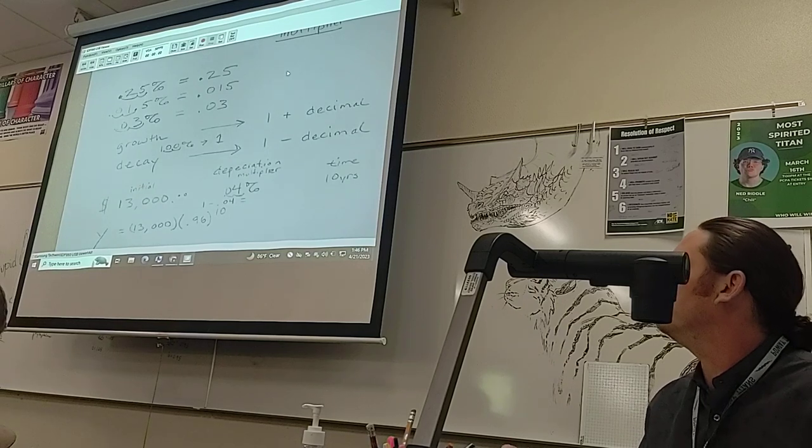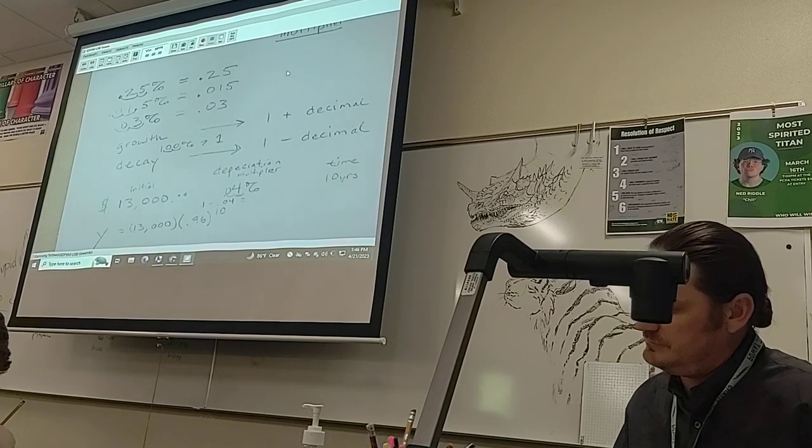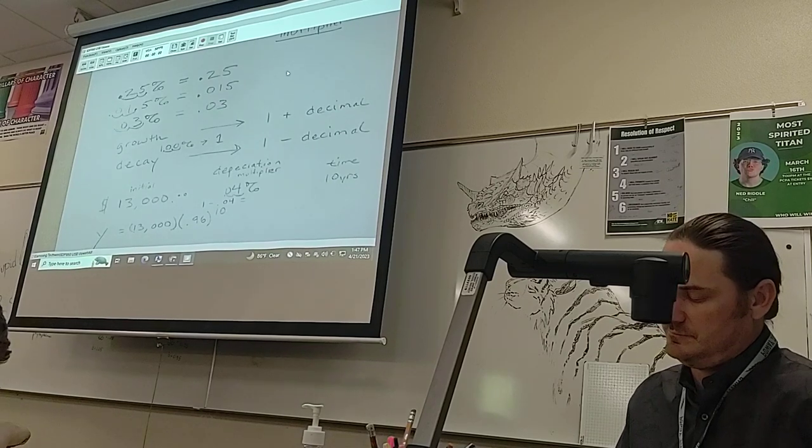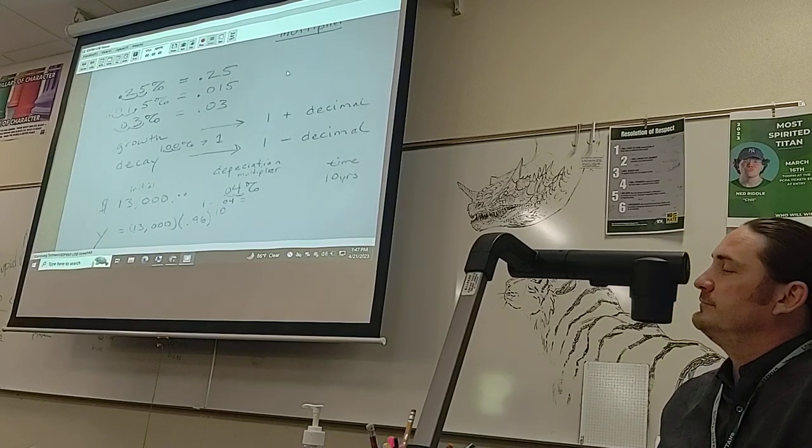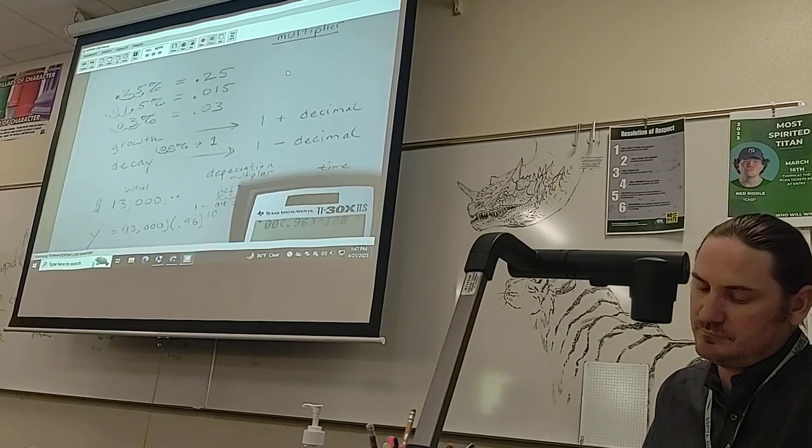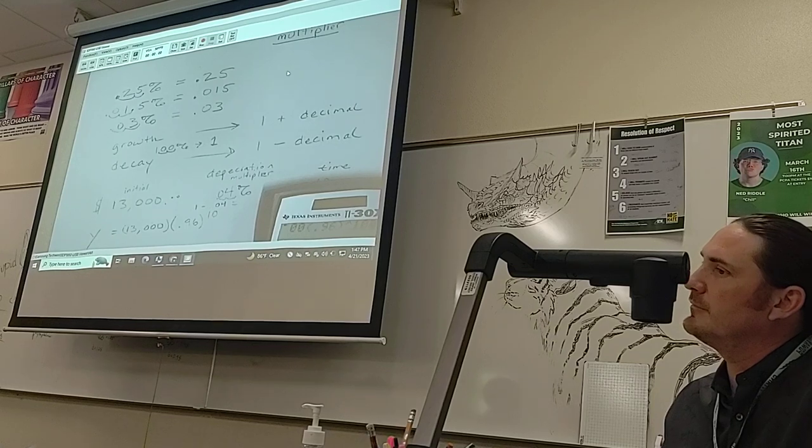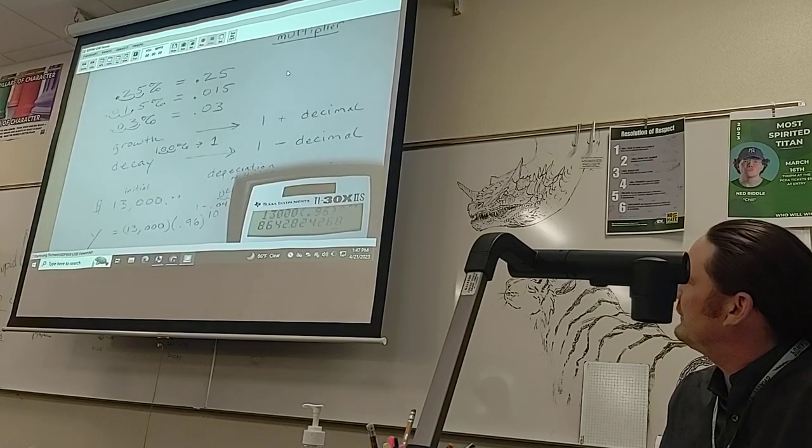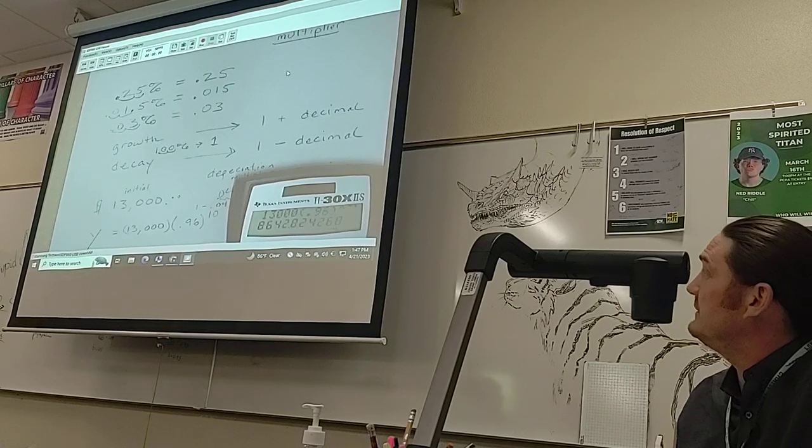Do you guys have calculators? Type it in just like that: we got 13,000 times our multiplier 0.96 to the 10th power. So it looks like after 10 years of 4% depreciation, the motorcycle will be worth $8,642.82.